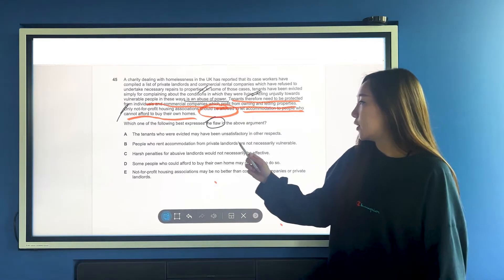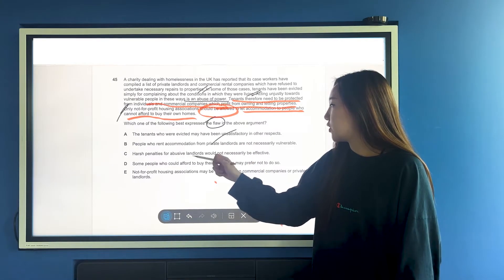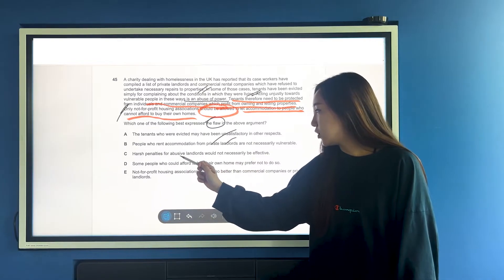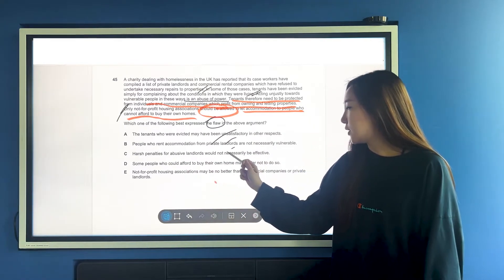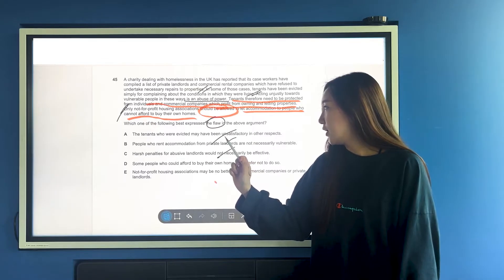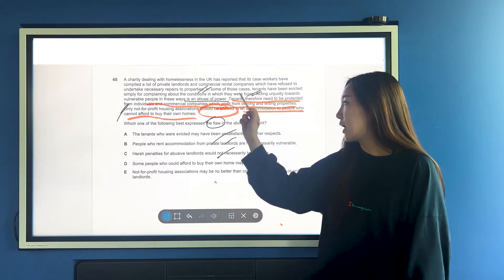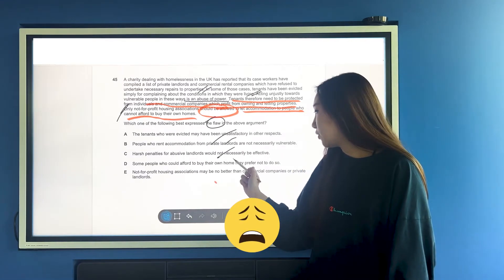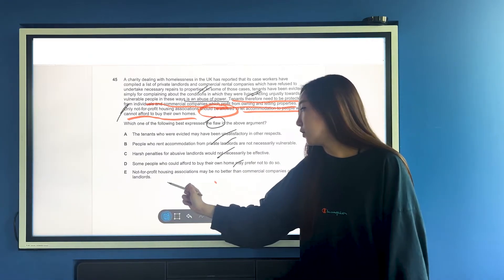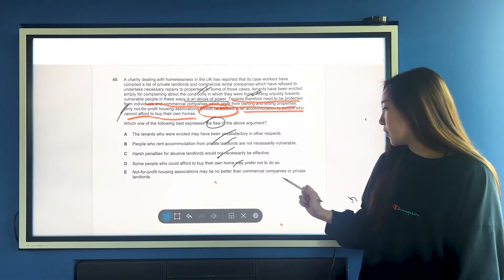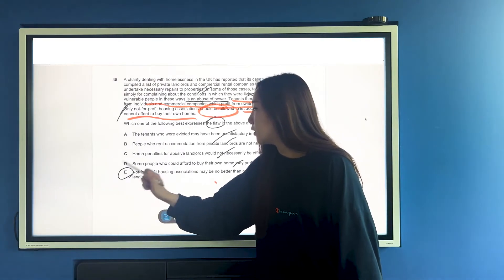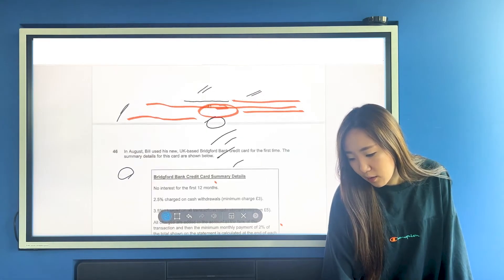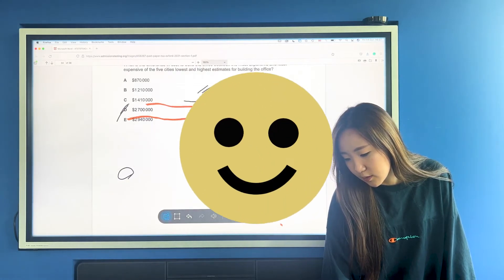We've drawn a conclusion based on these bad elements that all of it will be bad and that definitely the other solution will be better. It's just too much of a jump. A, the tenants who are evicted may have been unsatisfactory - that's not part of the argument. B, people who rent accommodation are not necessarily - doesn't matter either. C, harsh penalties for abusive landlords will not necessarily be effective - again, it's suggesting another opinion. D, some people who couldn't afford to buy their homes - definitely not. E, not-for-profit housing associations may be no better than commercial companies or private landlords. There we go. That is precisely what we want from the template that I gave you.